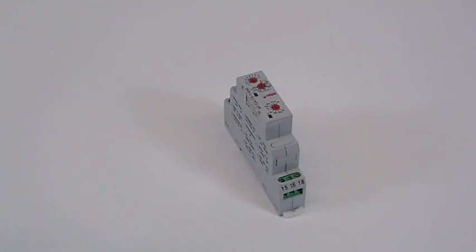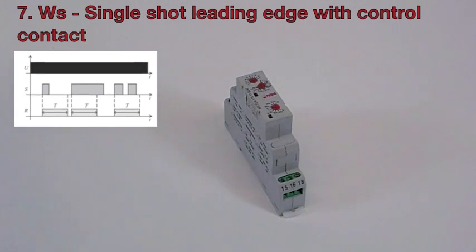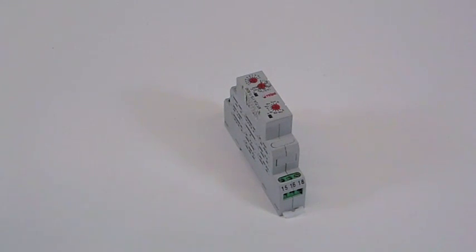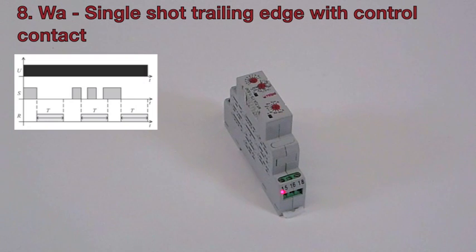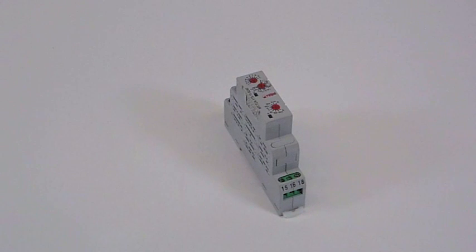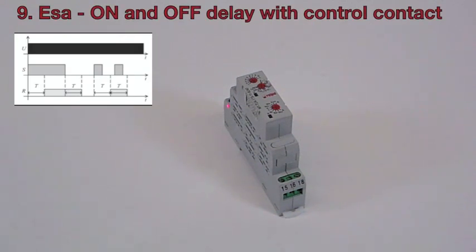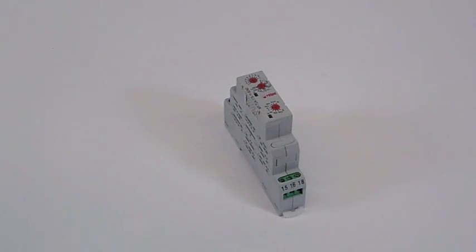The timer controls a single pole, fault free, changeover relay, rated at 16A. The output on pins 15, 16 and 18 at the bottom. The input for the supply is A1, S and A2 at the top.